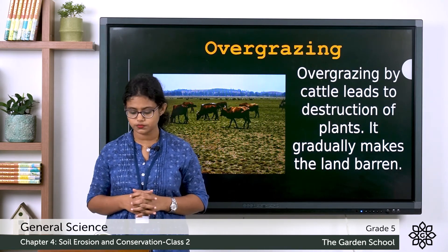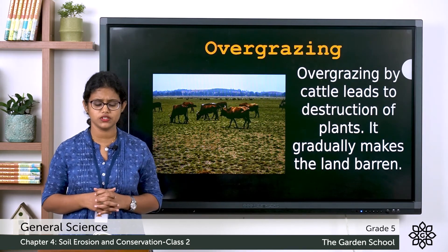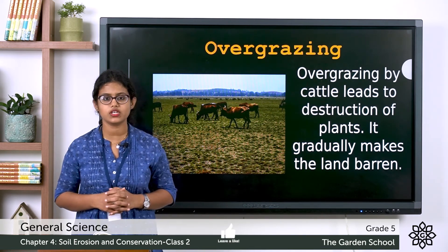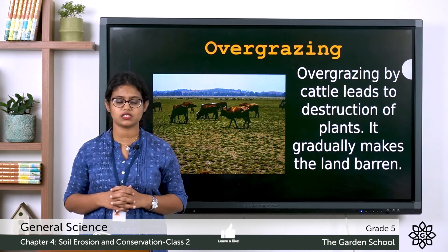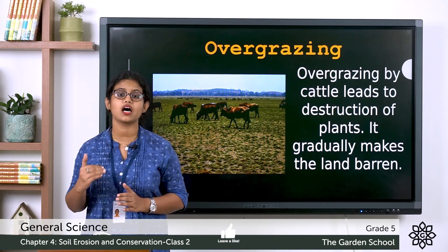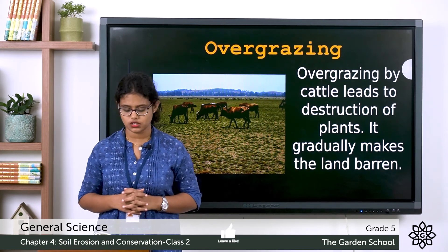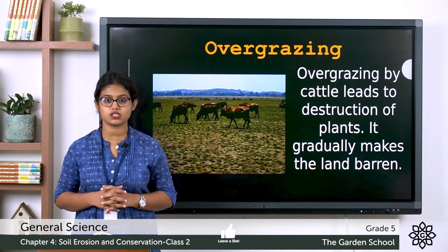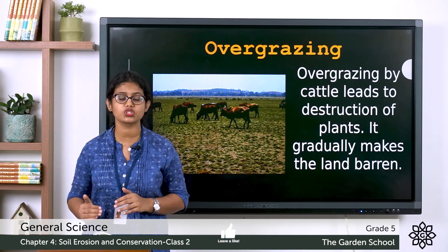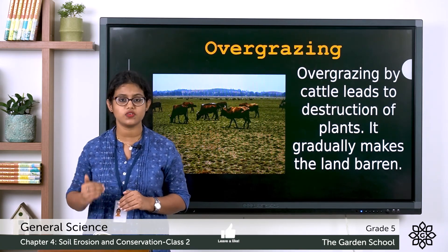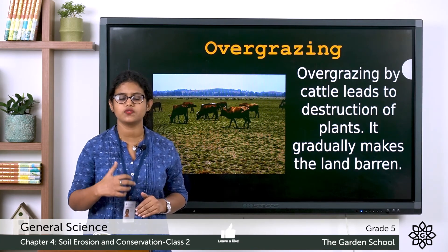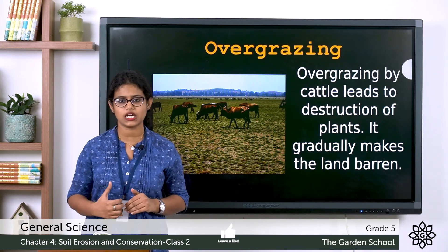Coming to page number 48, there are two questions. First: the topmost layer of the soil is infertile or fertile? The answer is fertile — it is the fertile soil where plants grow. Second: soil erosion makes the soil less fertile or more fertile? Soil erosion makes the soil less fertile, because as the top layer is washed away, the fertility of the soil decreases.